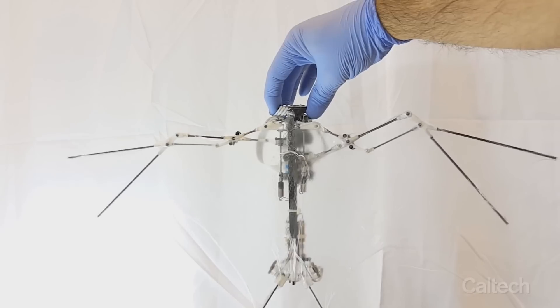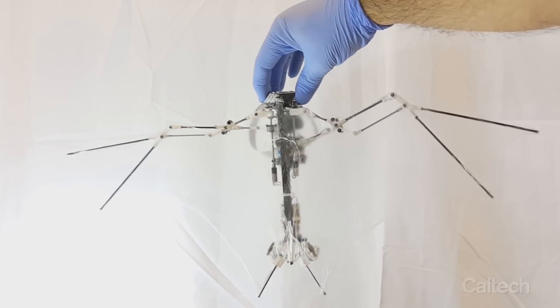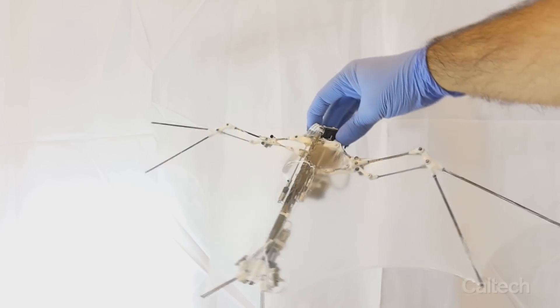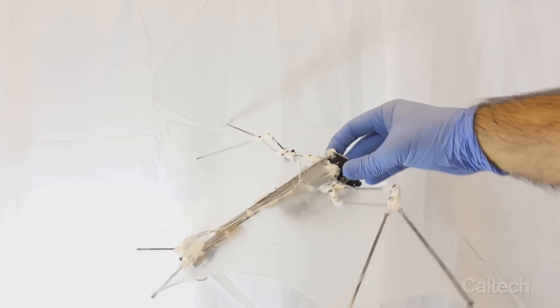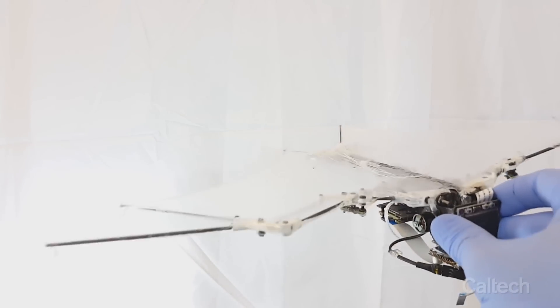We implement highly stretchable silicone-based membrane wings that are controlled at a reduced number of dominant wing joints to best match characteristics of bat flight.